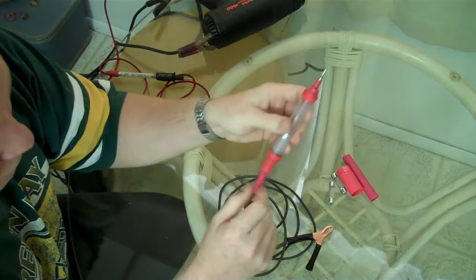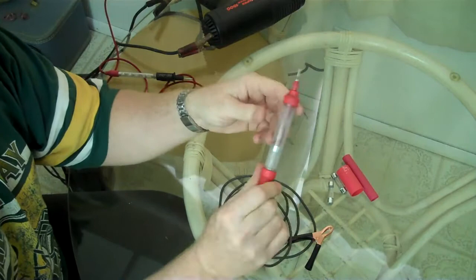Of course, you'd have to have the heat shrink on first, and then put it back together, slide the heat shrink over, shrink it back, and there you go. You get a great little test light.